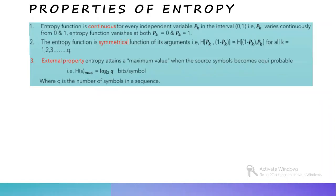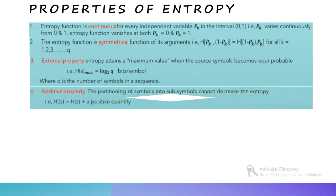The fourth property is the additive property. Additive property tells that the partitioning of symbols into sub-symbols cannot decrease the entropy. That is, H' of S equals H of S plus a positive quantity. Also, H' of S is always greater than or equal to H of S.